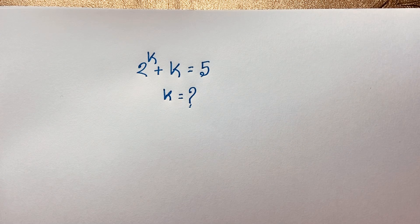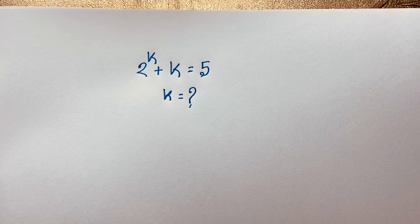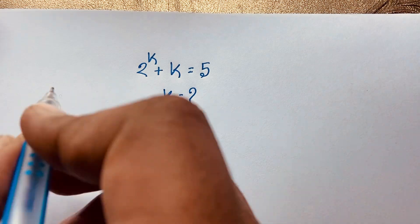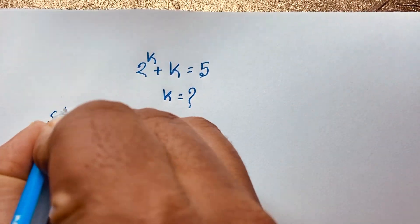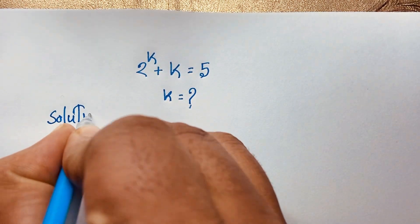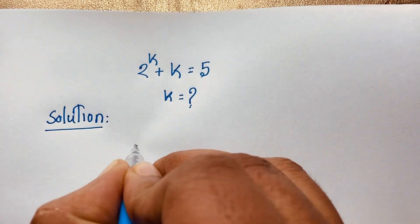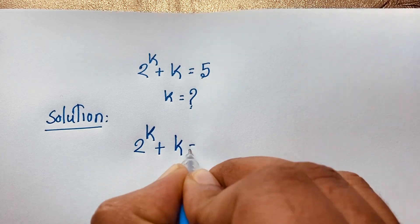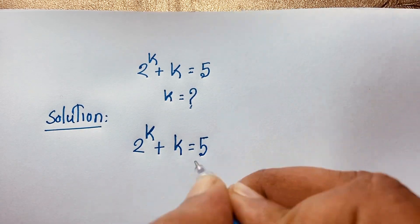Hello everyone. In this video we have solved a nice Harvard entrance exam question. This question is 2 to the power k plus k is equal to 5, and we find out what is the value of k in this exponential maths question. Let us start the solution. Our question is 2 to the power k plus k is equal to 5.